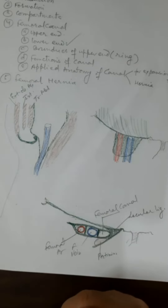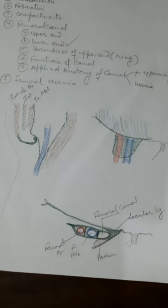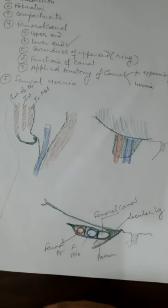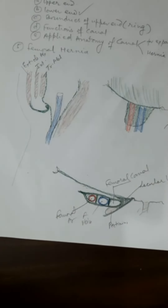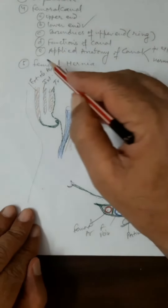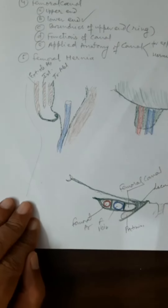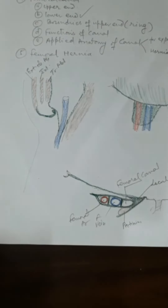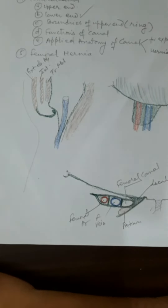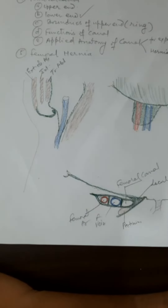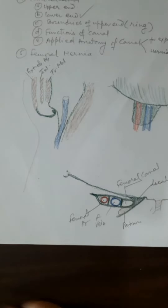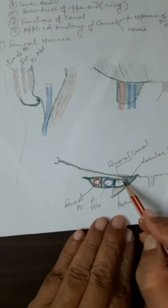Abdominal contents can push their way through this canal because it is an empty canal occupied only by fibro-fatty tissue, lymphatics, and sometimes a small lymph node. This may give rise to what is called femoral hernia, where the ring can give passage to abdominal content. The boundaries of this ring can be seen and appreciated with the diagram.